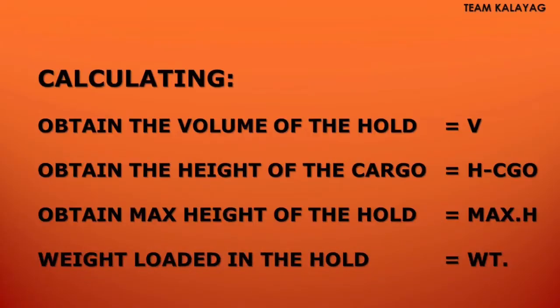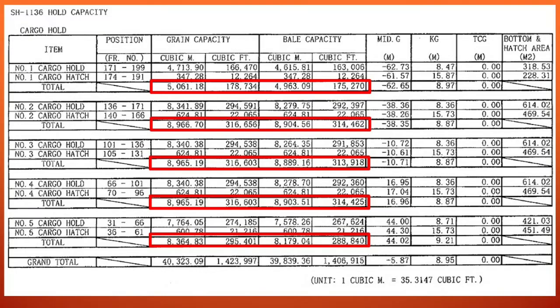In calculating the stowage factor, we need the following information. Number one, we need the volume of that particular hold. This information can be found in the hold capacity tables provided in the stability tables or stability books, and also in the ship's particulars.